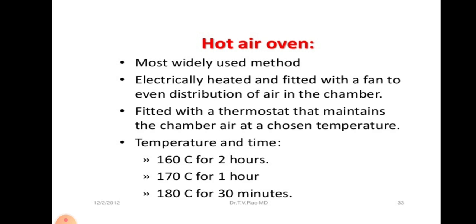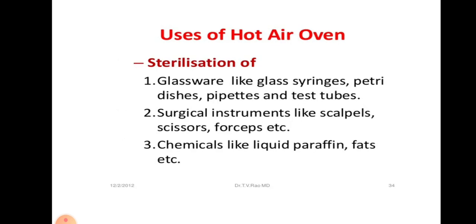The hot air oven is fitted with a thermostat that maintains the chamber's air at a chosen temperature. It can be used with three different temperatures: 160 degrees centigrade maintained for two hours, 170 degrees centigrade maintained for one hour, and 180 degrees centigrade for 30 minutes to achieve sterilization of inserted glassware. Uses of hot air oven include sterilization of glassware like glass syringes, petri dishes, pipettes and test tubes. Surgical instruments like scalpels, scissors and forceps are also sterilized in the hot air oven. Chemicals like liquid paraffin and fats are also sterilized in this hot air oven.